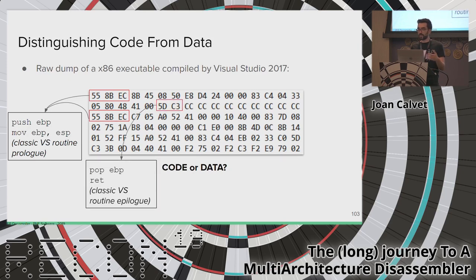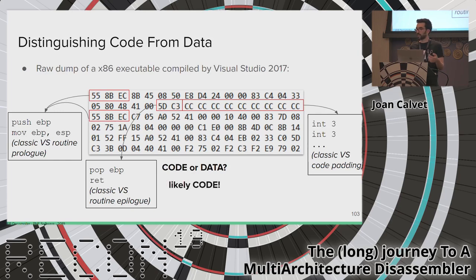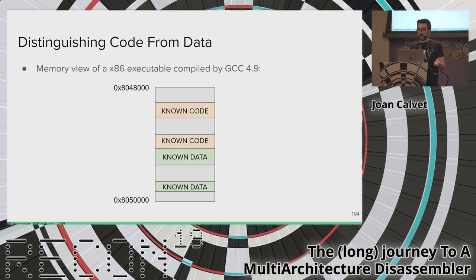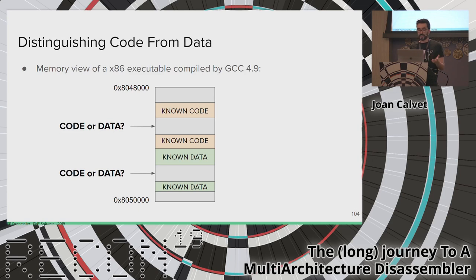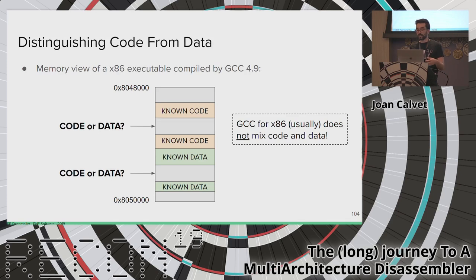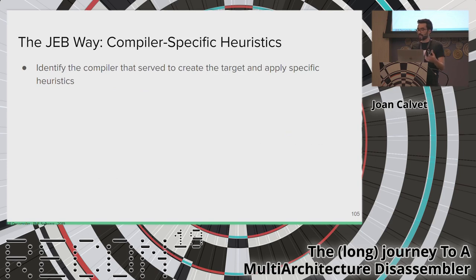For example, looking at a raw dump of an x86 executable compiled by Visual Studio, three bytes may correspond to push EBP / mov EBP, ESP — the classic Visual Studio routine prologue — followed by the classic epilogue and a slate of 0xCC bytes — the classic Visual Studio code padding. Knowing the compiler, this really looks like code. In another example with a GCC x86 executable, knowing the compiler helps: GCC for x86 usually does not mix code and data, so unknown areas adjacent to code areas are likely code, while those adjacent to data areas are likely data.